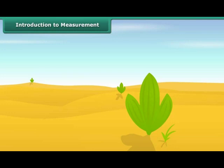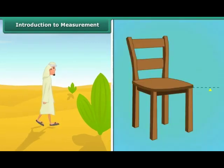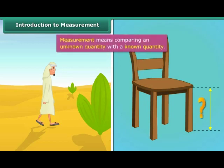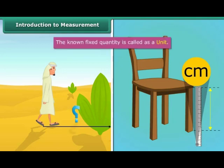Introduction to Measurement. Do you know how people know how much have they travelled or how much is the length of a leg of a chair? This is done by using a term called Measurement. Measurement means comparing an unknown quantity with a known quantity. The known fixed quantity is called as a unit.